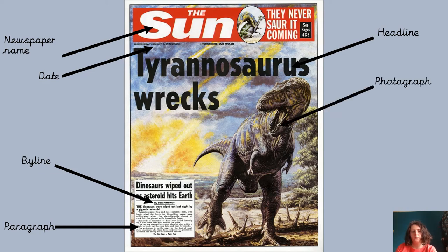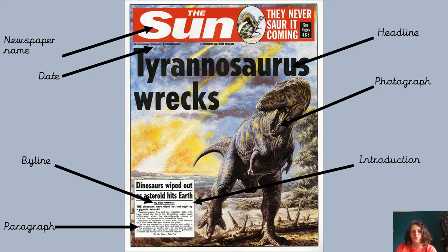Then we have a photograph. Obviously this is a drawing, but in real newspapers it would be a photograph linked to the story. The first section of a newspaper report is called the introduction, which we also had in our non-chronological reports. In a news story, the introduction is going to be the most interesting piece of information — the most interesting fact or event you need to know about — so that you know what's happening and you want to find out more.